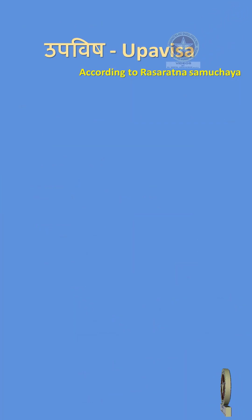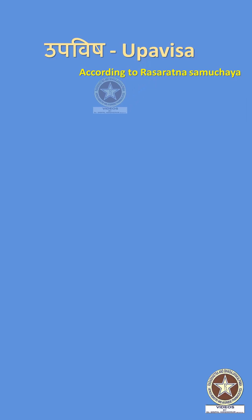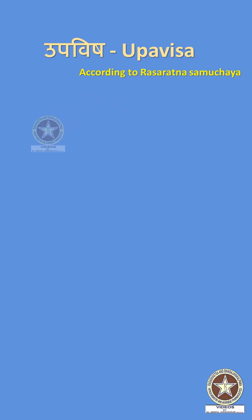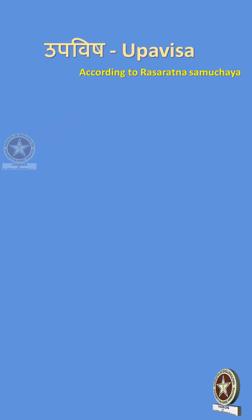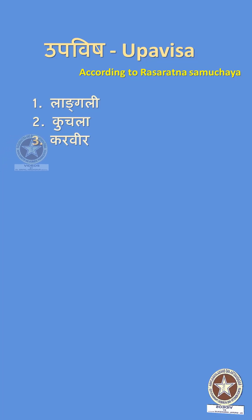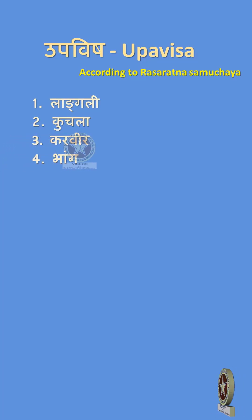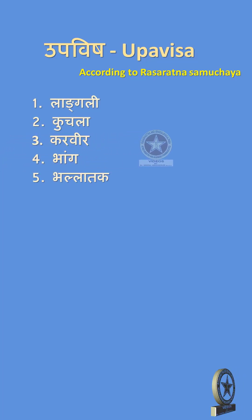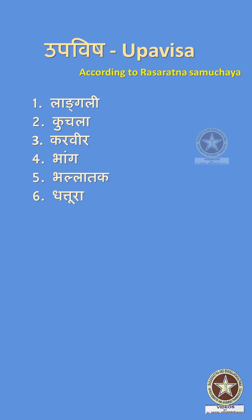According to Rasaratna Samuchaya, seven drugs are categorized under Upavishahs: Langali, Kuchala, Karavira, Bhanga, Bhallataka, Dattura, and Arka.